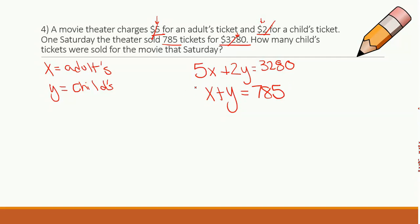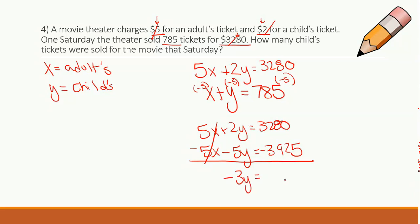So let's solve this. I'm going to multiply the bottom equation by negative 5, canceling out my x's. So I'm going to rewrite my top here. I'm going to get minus 5x, negative 5 times y is negative 5y, and negative 5 times 785 is negative 3,925. Let's cancel our x's out. I'm left with negative 3y equals negative 645. Divide by 3. And I get y equals 215.